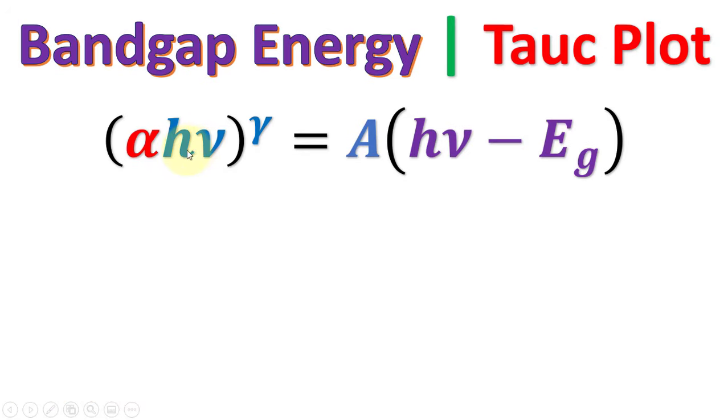This is the Tauc equation which Tauc used in 1968 to calculate the absorption edges, that is the band gaps of amorphous germanium and silicon from their absorption data. In this equation, alpha is the absorption coefficient.